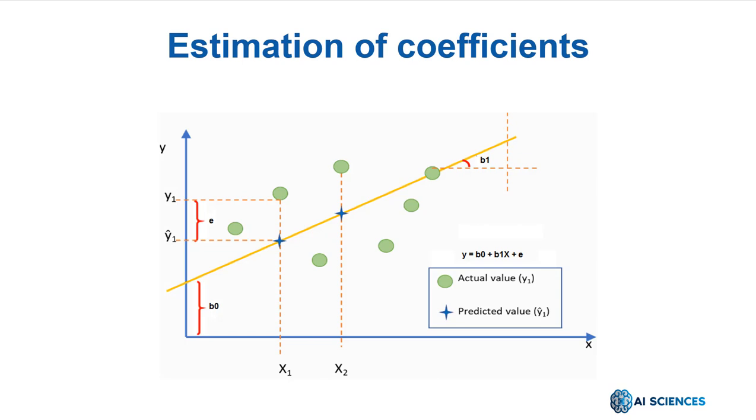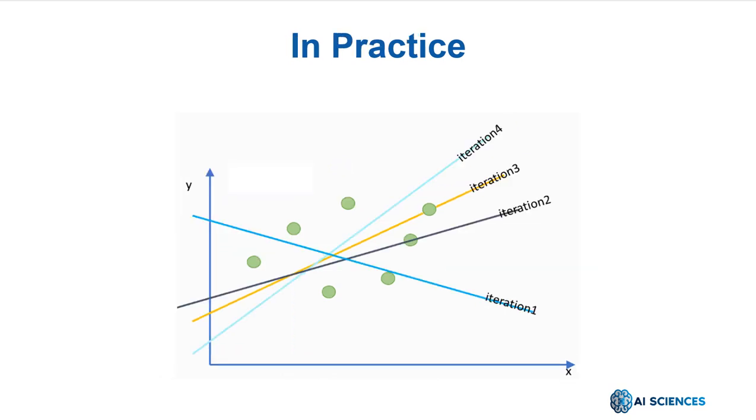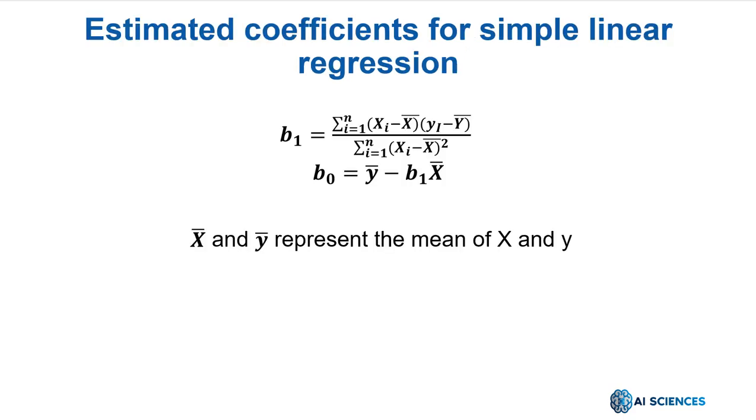In practice, we use the OLS algorithm – that's Ordinary Least Squares – iteratively. In each iteration, the algorithm calculates the sum of the individual squared errors. And in the next iteration, the algorithm updates model parameters to shift the line from the previous position to reduce the squared error. Finally, the best OLS estimators of the coefficients are... In these equations, X bar and Y bar represent the mean.